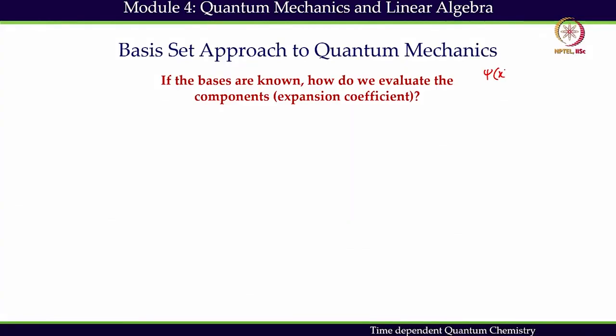Welcome back to module 4. In this module we have been presenting the connection between quantum mechanics and linear algebra. We have presented the basis set approach to quantum chemistry, where psi(x) can be expanded in the basis of phi_i. This is valid because phi_i living in the Hilbert space implies psi will also live there, since a linear combination of wave functions in the Hilbert space also lives in the same Hilbert space.